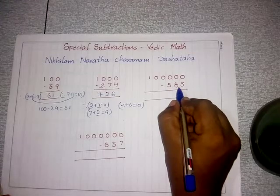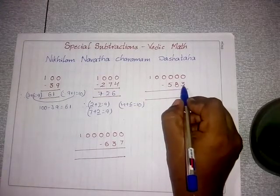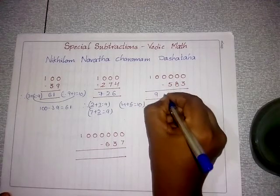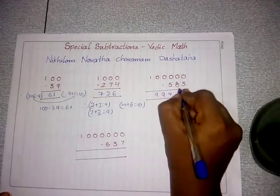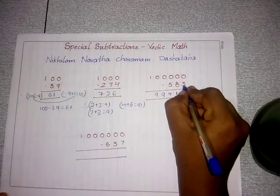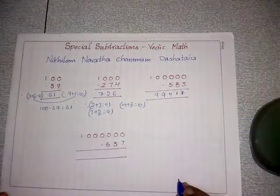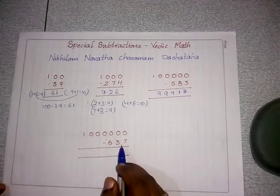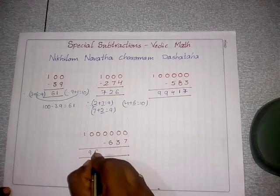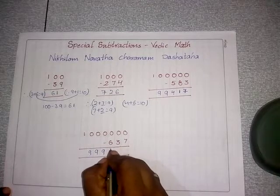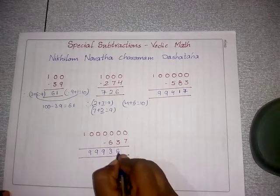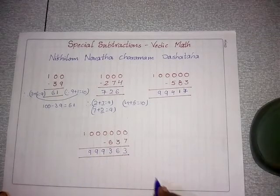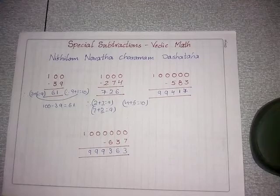Another Nikhilam example: 1000 minus 583. All non-unit digits go to 9, unit digit goes to 10: 5 plus 4 equals 9, 8 plus 1 equals 9, 3 plus 7 equals 10 — write 7. One more: for a larger number, add units place to 10 and all other places to 9: 0 plus 9 equals 9, 0 plus 9 equals 9, 6 plus 3 equals 9, 3 plus 6 equals 9, giving answer 10 — add 7 to 3 equals 10. This is the answer. If you like this video please subscribe, share and like. Thank you.